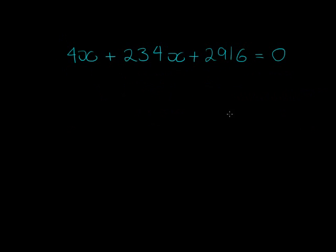Now can we divide a 4 into all of the terms? No, we can't. 234 is not divisible by 4. So let's just do 2. I'm dividing everything with a 2. So 2x squared plus 117x plus 1458 equals 0.